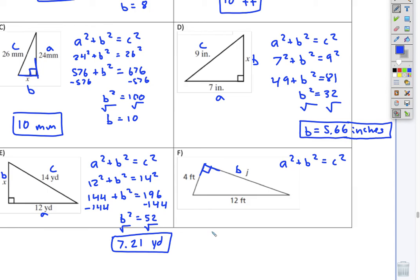Okay. And then the last one, we'll do 4 squared plus b squared equals 12 squared. b squared equals 128. Square root. This is not going to be a perfect square. So we're going to round a little bit. We get, we'll say 11.31 feet.